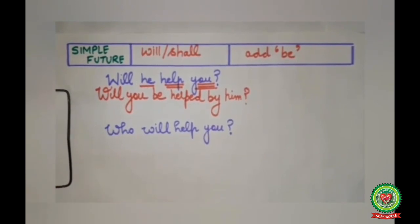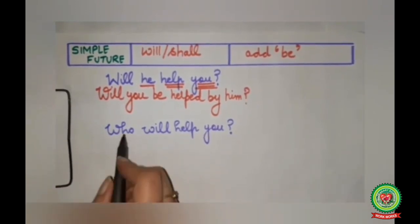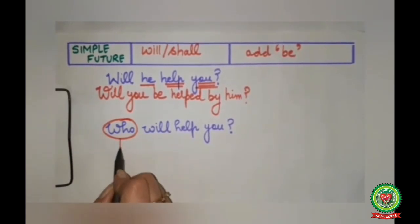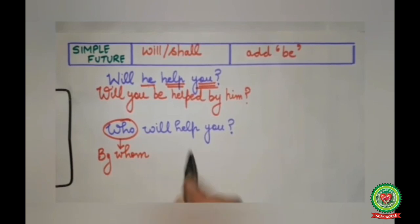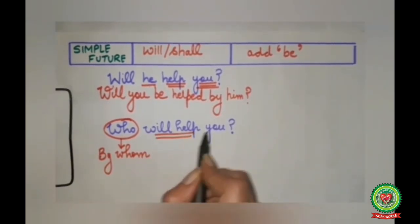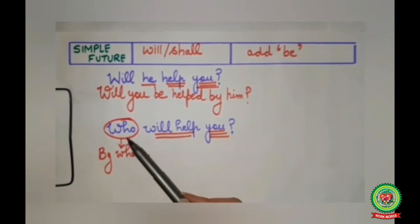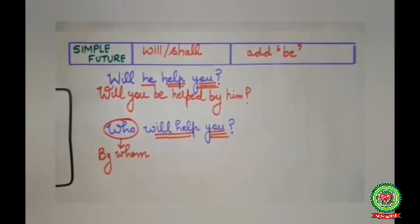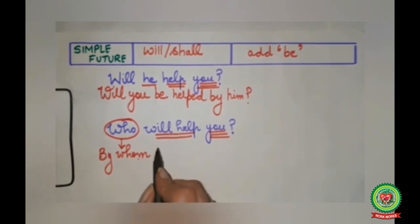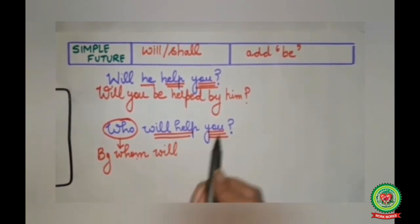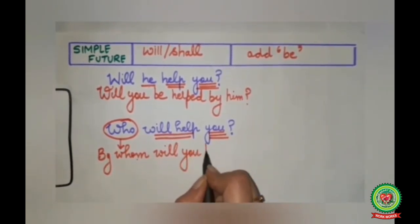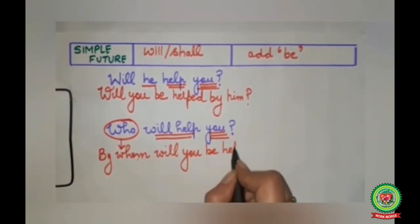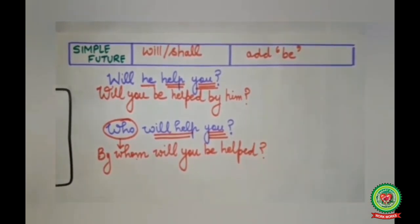Now we will do the second question. 'Who' — in this question there is no subject. So we will not add a subject. 'Who' will change into 'by whom'. After 'by whom', 'will' comes, then 'you', then 'be', then 'helped'. So the passive becomes: 'By whom will you be helped?' with a question mark.